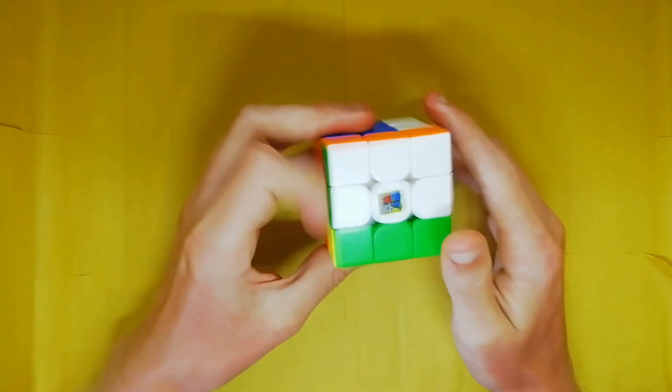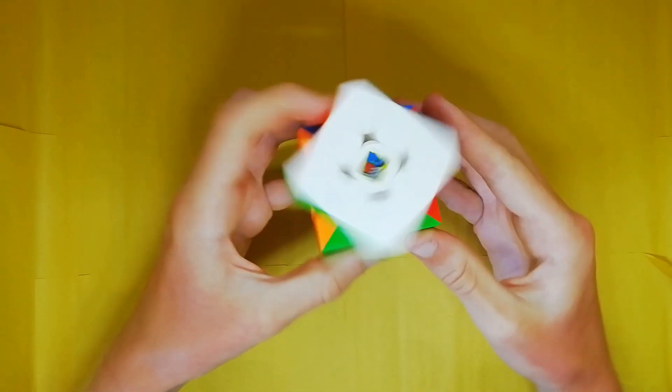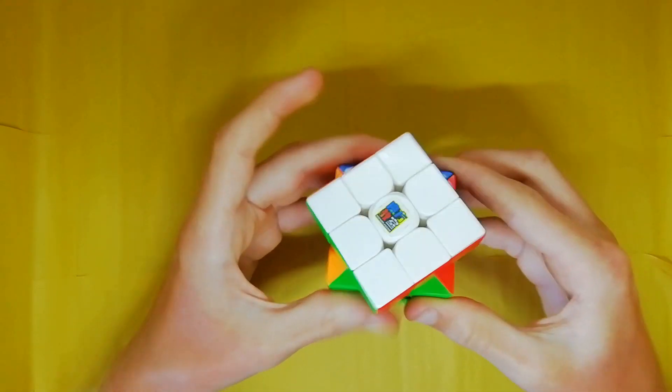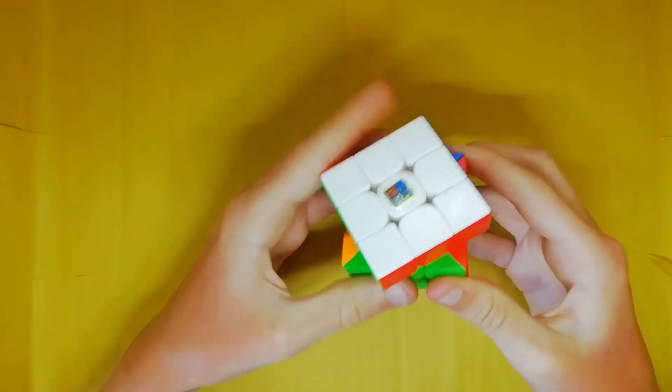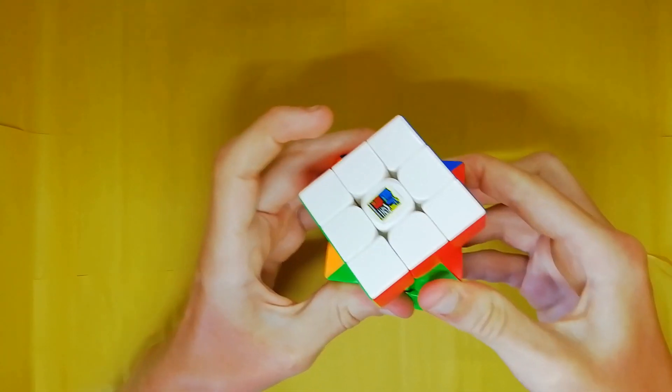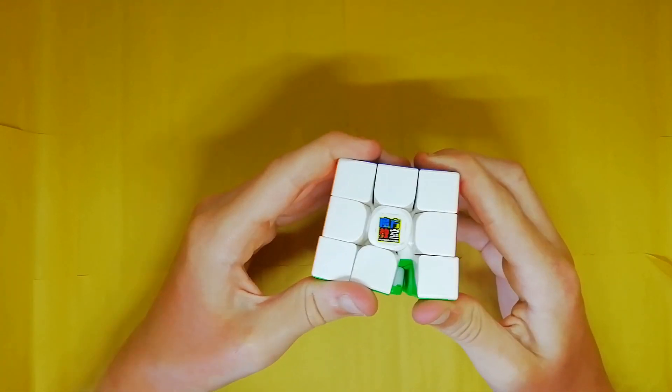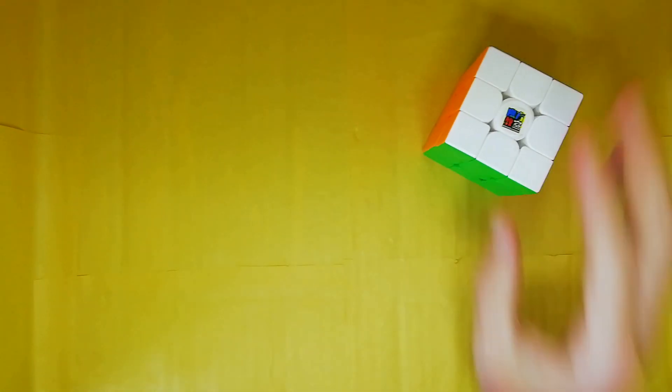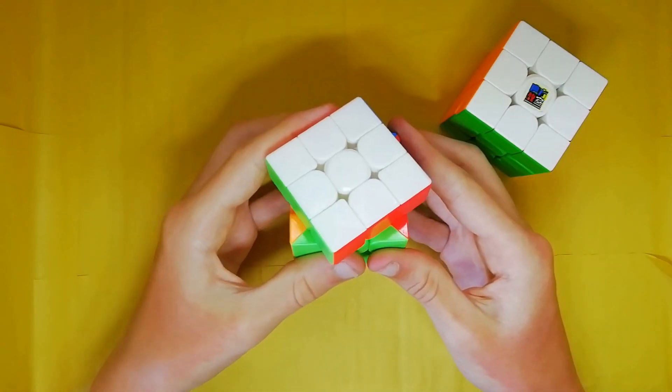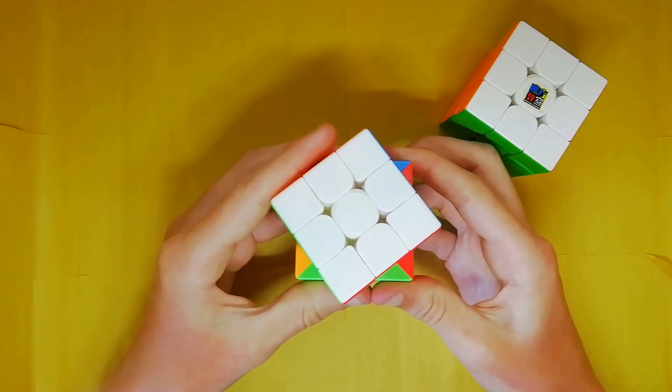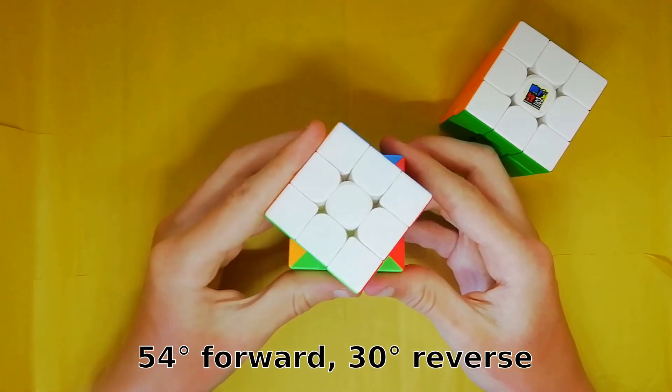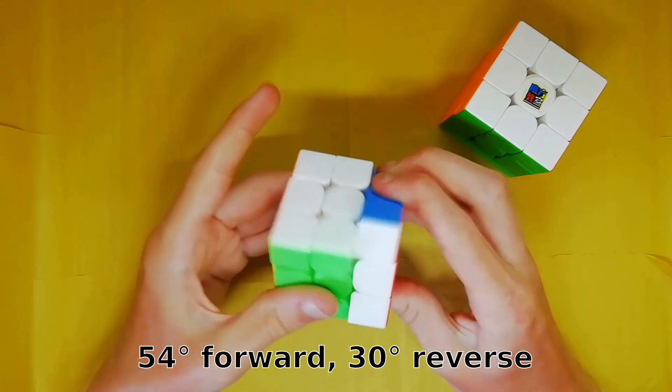So it has, I put it at 54 degrees corner cutting, but quite a lot of force required for that, which is a bit strange. It could be the tensions. This cube is slightly looser, this non-magnetic Meilong, and I think it has slightly more corner cutting and slightly better reverse corner cutting.